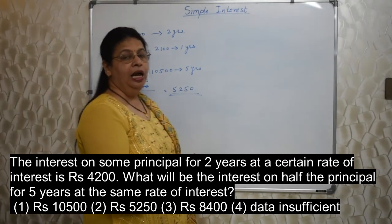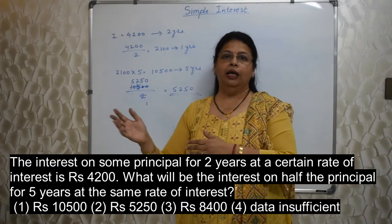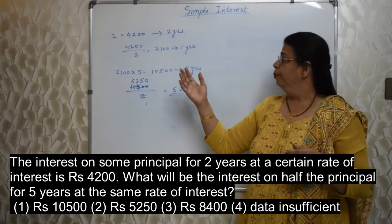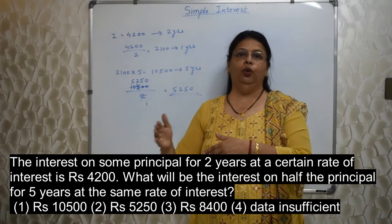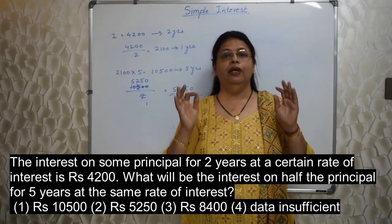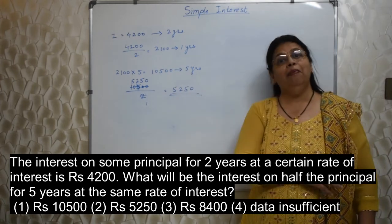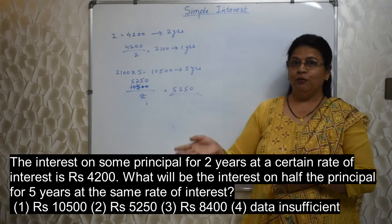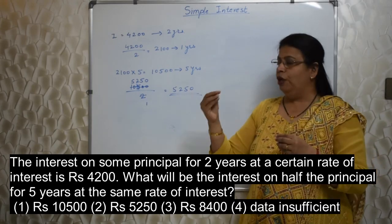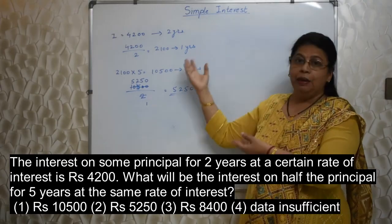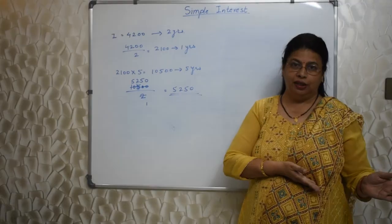Isn't it interesting? Have I used any formula of simple interest? I is equal to P N R upon 100 or rate is equal to interest into 100 upon P into N. Nothing. I have not used even a single formula. I have just used unitary method. Isn't it interesting? Sum is from simple interest, but no formula. Even easier. Formula is also easy, this is also easy. Simple unitary method which you have learnt in earlier standards.